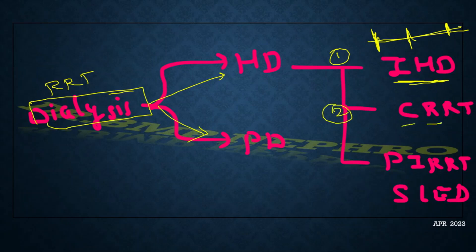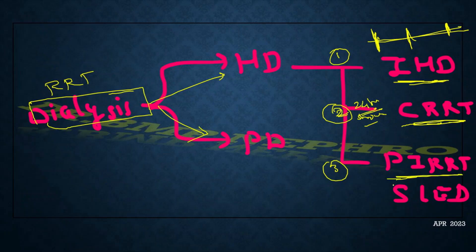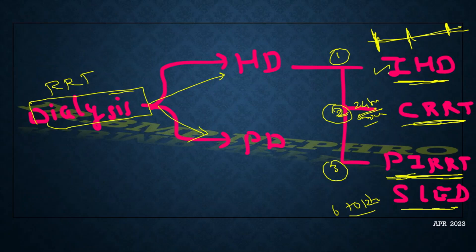The second category is continuous renal replacement therapy, usually done in severely hemodynamically compromised patients in shock, where dialysis is ongoing for 24 hours. The third category is PIRRT — prolonged intermittent renal replacement therapy, also called slow low-efficacy dialysis — where dialysis duration ranges from 6 to 12 hours. These are the three categories of hemodialysis based on modality and duration.